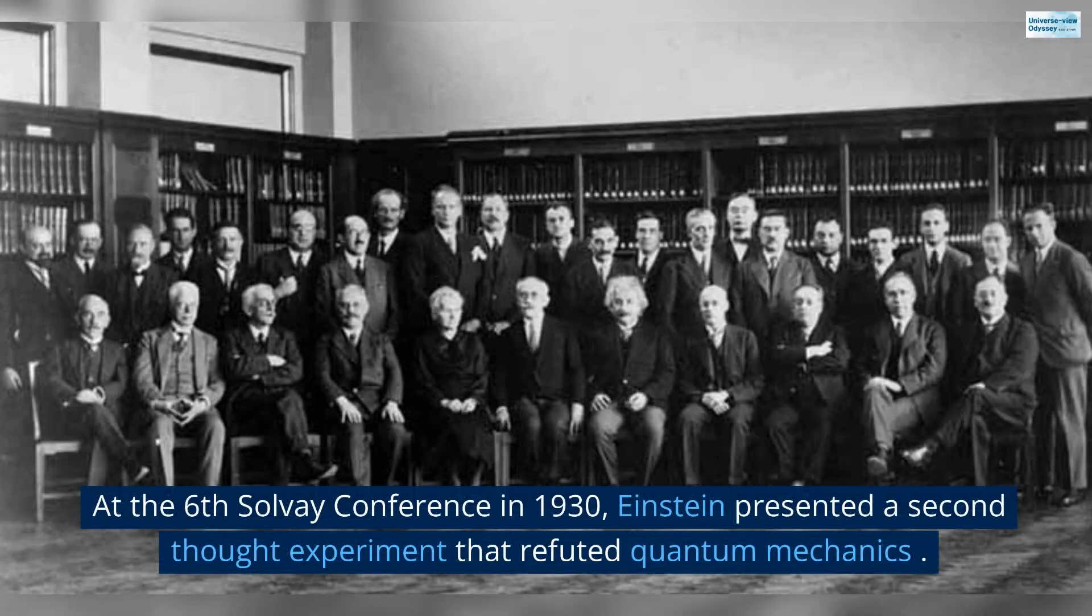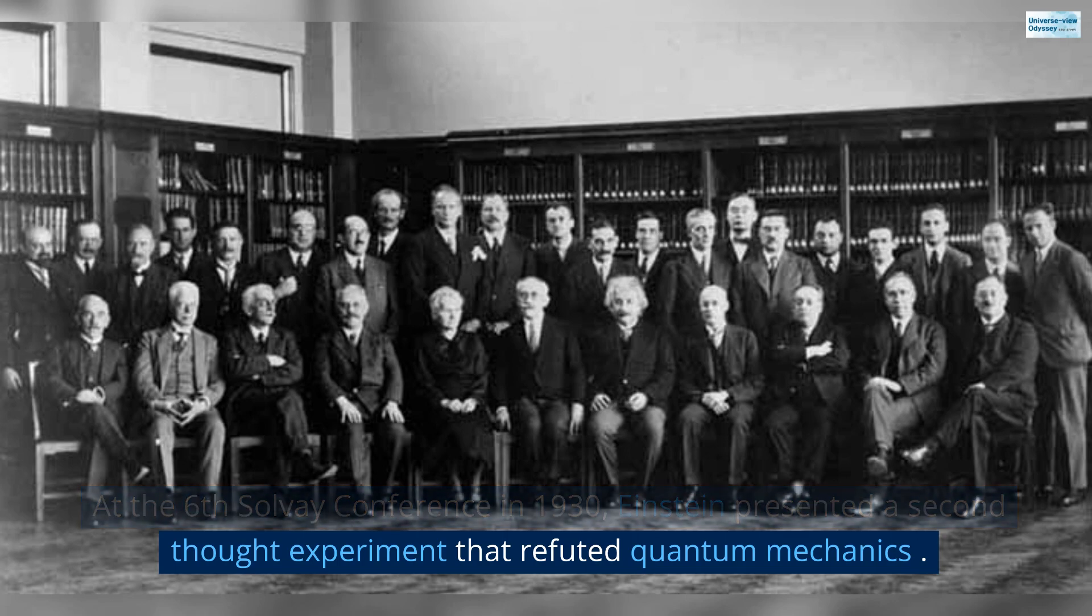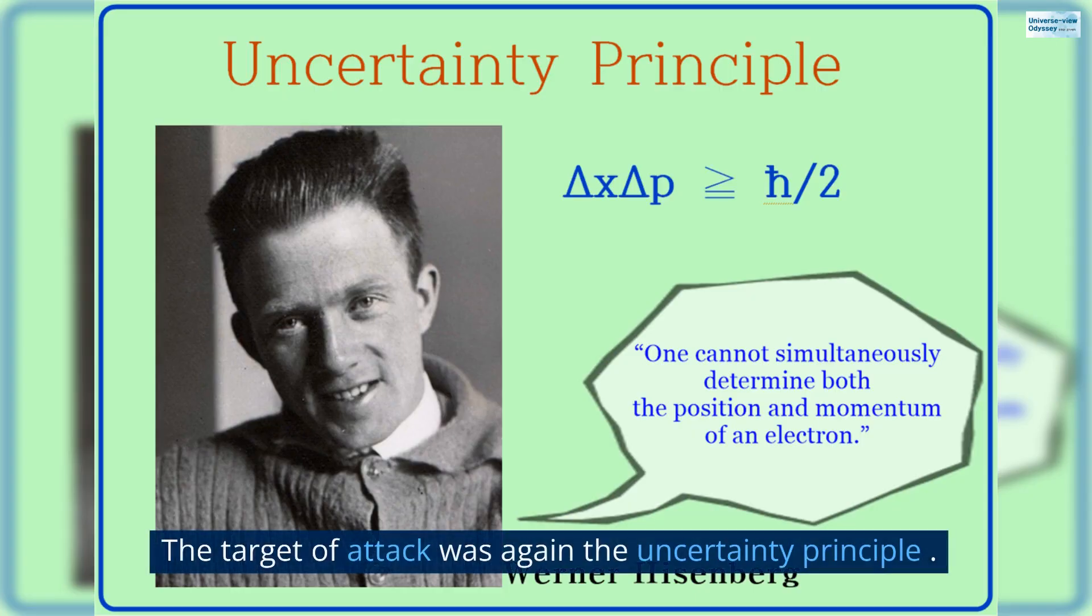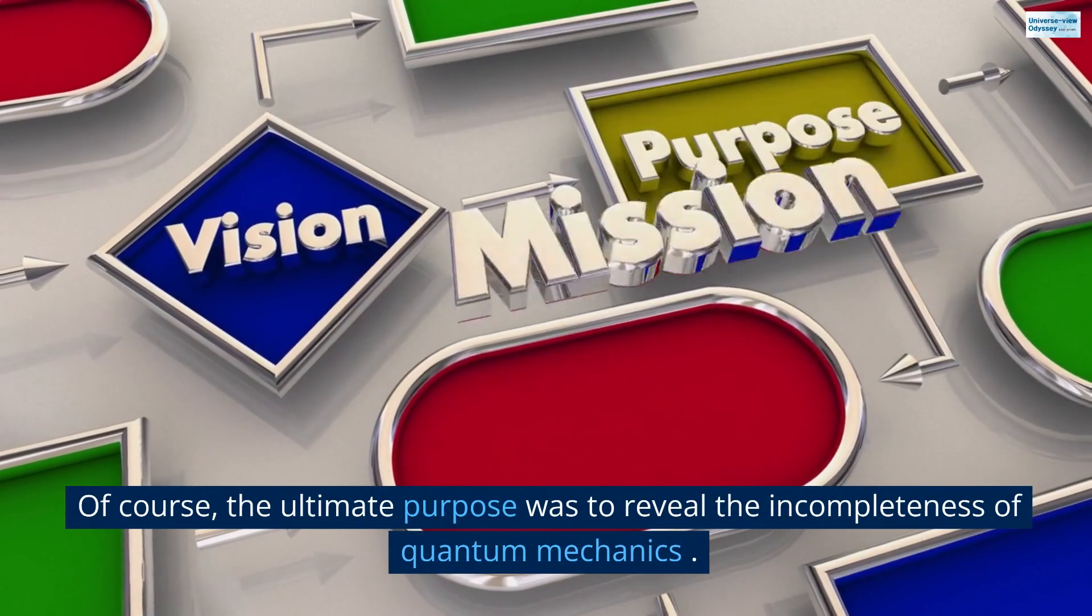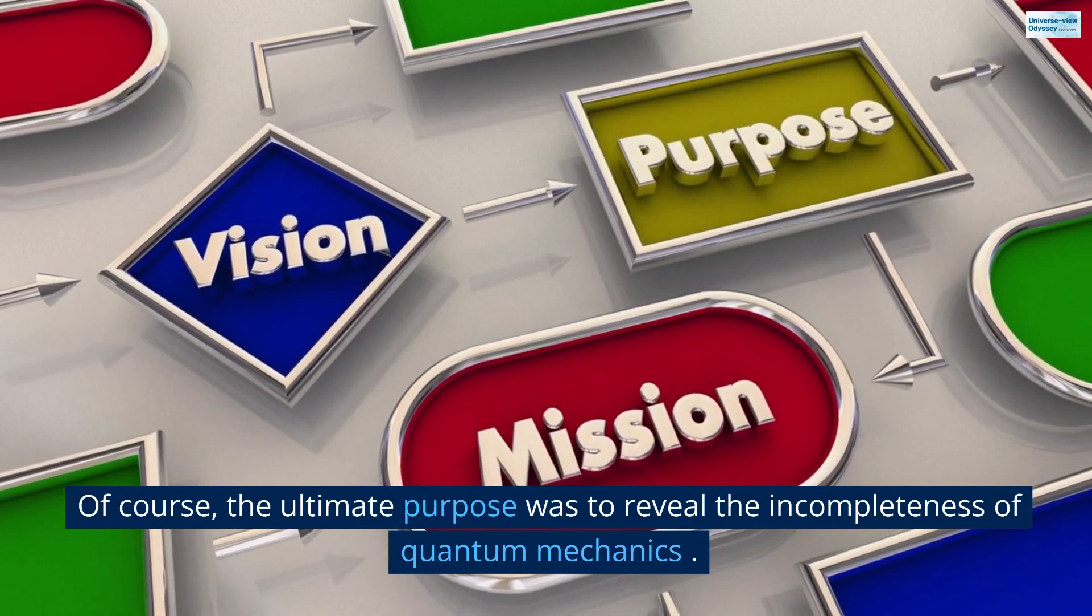At the 6th Solvay Conference in 1930, Einstein presented a second thought experiment that refuted quantum mechanics. The target of attack was again the uncertainty principle. Of course, the ultimate purpose was to reveal the incompleteness of quantum mechanics.